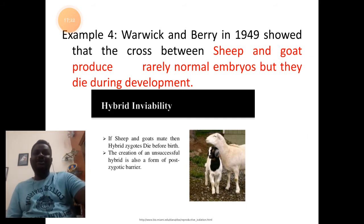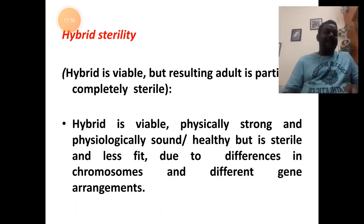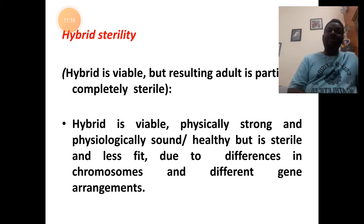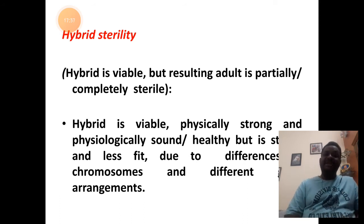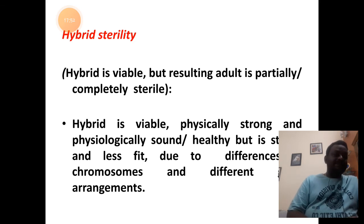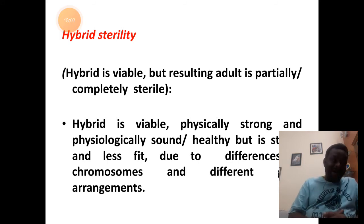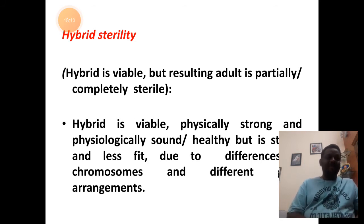The last type of post-mating reproductive isolation is hybrid sterility. Hybrid refers to the new born — it will have sterile conditions. It is viable but sterile. The hybrid is formed and it lives — physically it is strong and physiologically also healthy — but it is sterile, meaning it cannot reproduce new ones. The sterility is due to difference in chromosome number and genetic matter. Hybrid sterility is a condition where the hybrid is formed, it is viable and healthy, but it cannot reproduce.